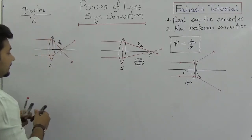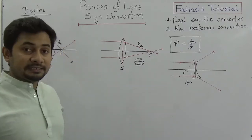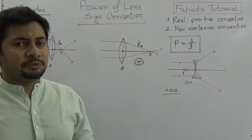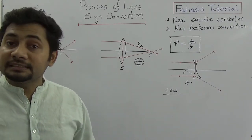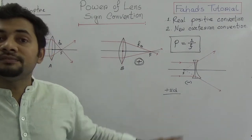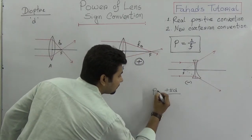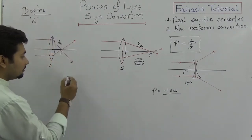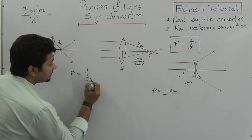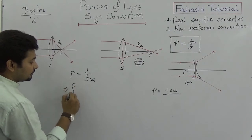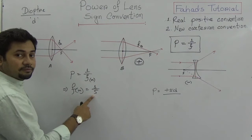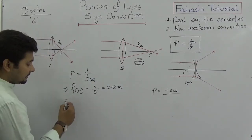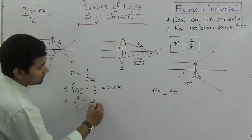Consider this example: a person is using spectacles of plus 5 diopters. The question is — what is the nature of that lens, and what is the focal distance? Using P equals 1 over F, we get F equals 1 over 5, which is 0.2 meters. So the focal distance is 0.2 meters or 20 centimeters, and this is a convex lens because the power is positive.